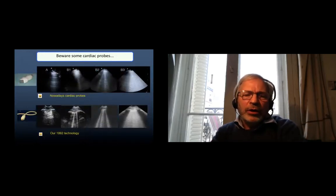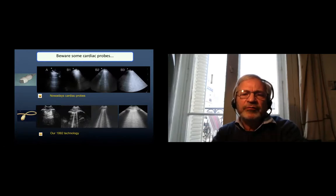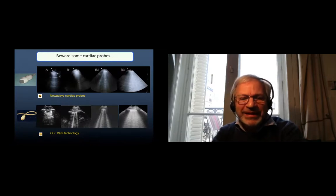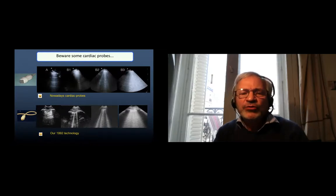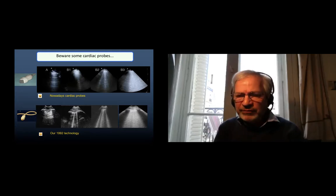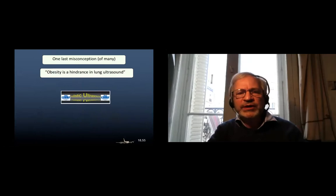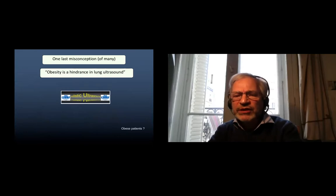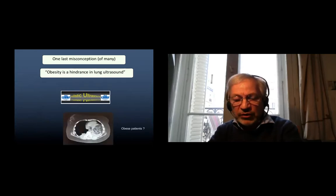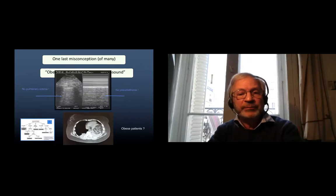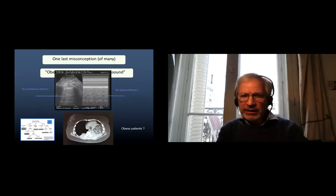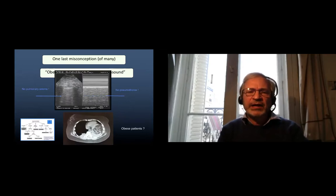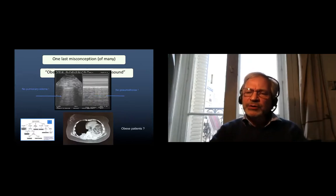Look, the upstairs images they are taken from a cardiac probe and downstairs from our 1992 technology. So it is possible to make diagnosis. It is more difficult and sometimes it will be more confusing. One example of misconceptions: they all say obesity is a hindrance in lung ultrasound. So look at this patient, very obese, but in spite of the high thickness of fat, I can see clearly there is no B-line, no pulmonary edema, and there is the seashore sign, no pneumothorax. Because this patient is the A profile, that is the normal profile.